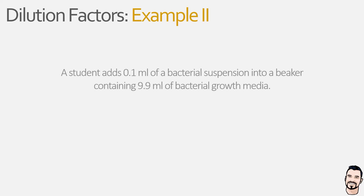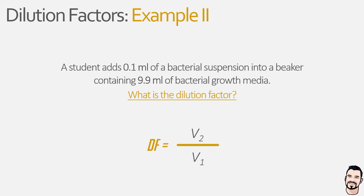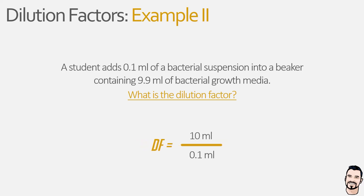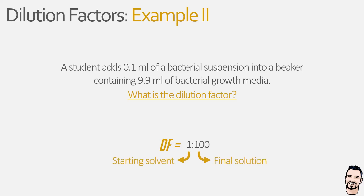In a second example a student adds 0.1 millilitres of a bacterial suspension into a beaker containing 9.9 millilitres of bacterial growth media. The student wants to know what is the dilution factor. As always we bring up our equation where the dilution factor is equal to V2 divided by V1. Our V2 will be 0.1 millilitres plus 9.9 millilitres, which is then divided by 0.1 millilitres. Solving the top of the equation first gives us 10 millilitres divided by 0.1 millilitres, giving us the final answer of 100, which is unitless. Therefore the dilution factor is 1 in 100, meaning for every 100 parts of our final solution one of those parts will be our bacterial suspension.